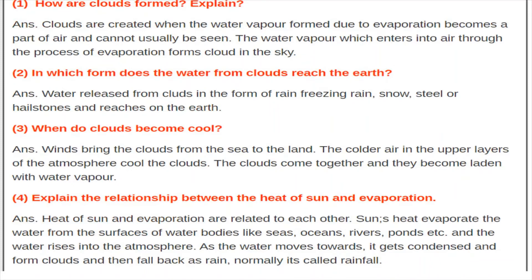First question: How are clouds formed? Explain. We have seen how clouds form due to evaporation of water bodies when they are heated up by the sun. Clouds are created when water vapour forms due to evaporation, becomes part of the air, and cannot usually be seen. Can we see water vapours when the sun is heating the water bodies? No — it just becomes part of the air.